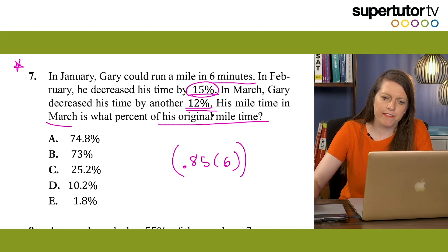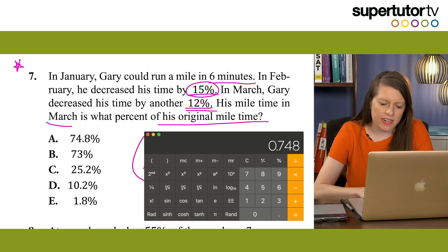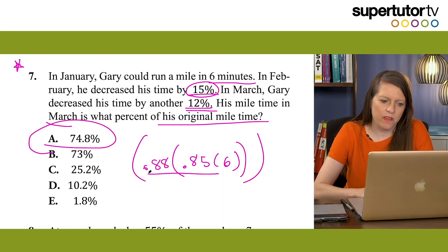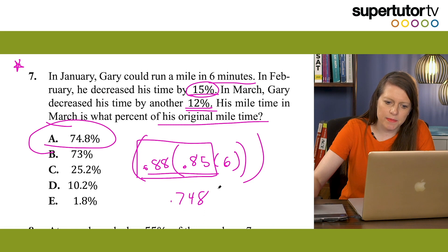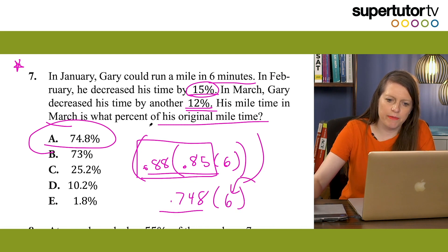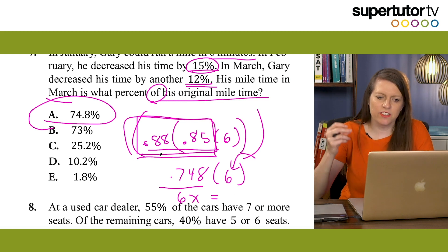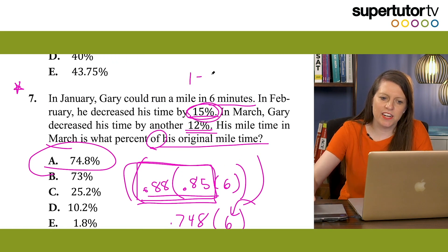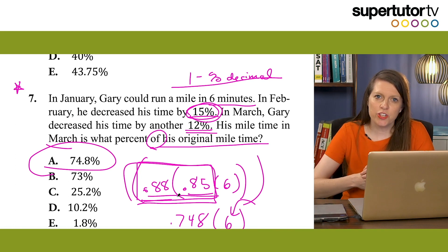If 15% is off, I'm preserving 85%, so I use 0.85. Then if 12% is off, I'm preserving 88%, so I multiply by 0.88. On the calculator: 0.88 times 0.85 equals 0.748, meaning 74.8% of his original time. All I need to do is multiply those decimal forms together. His mile time in March is 0.748 times 6 minutes, and we can set up the percent equation from there.